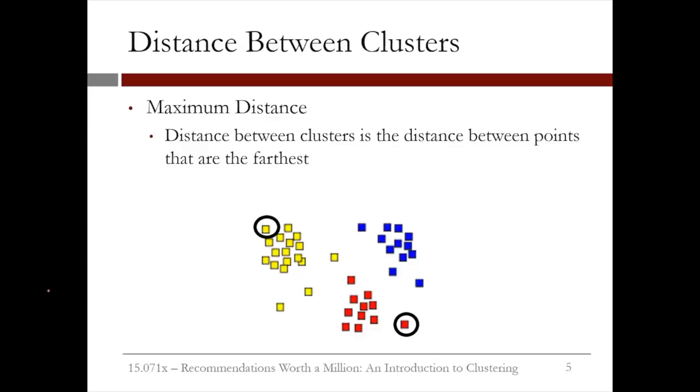Alternatively, we could use maximum distance. This one computes the distance between the two clusters as the distance between the two points that are the farthest apart. So for example, we would compute the distance between the yellow and red clusters by looking at these two points. Here it doesn't matter how close together the other points are. All we care about is how close together the furthest points are.